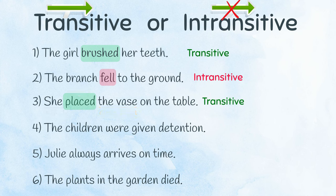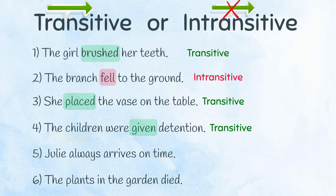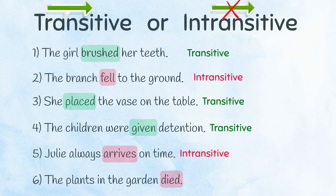The fourth sentence is written in passive voice. Who or what is receiving the action of the verb given? The children. The direct object is the children. The action of the verb moves from a hidden subject, most likely a teacher, to the children. This means given is transitive. Number five: arrives is intransitive, as there is no direct object — there is nothing receiving the action. Number six: died is another intransitive verb. There is no direct object.